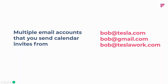You might have a common situation where your primary account is bob@tesla.com, but you might also be sending calendar invites from bob@gmail.com or bob@teslawork.com. Those are all your emails at the end of the day, but they're different aliases that the invites might be coming from. Because you're registered with bob@tesla.com, when you send those calendar invites, Fireflies will only be able to process invites from bob@tesla.com.